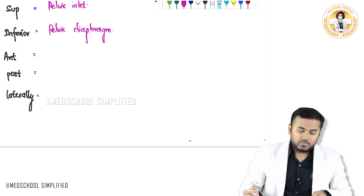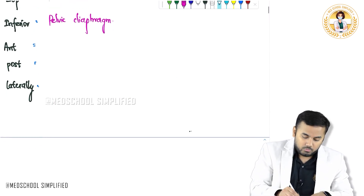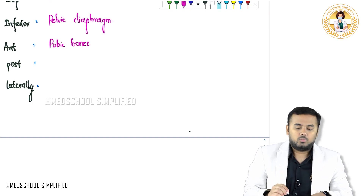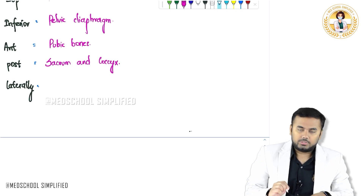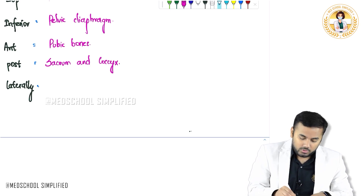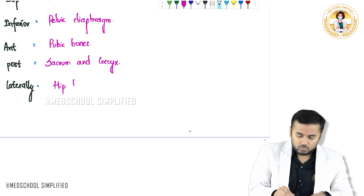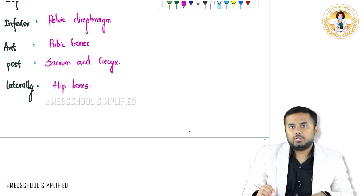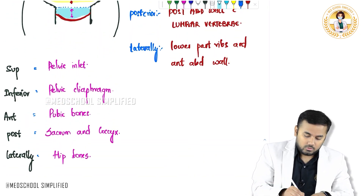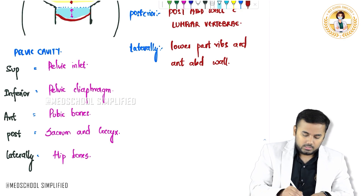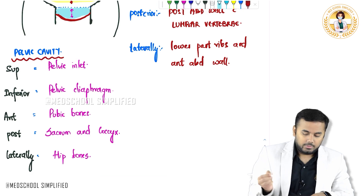So anteriorly you have got the pubic bones. Posteriorly you have got sacrum and coccyx. And laterally you have got your hip bones. These are the structures that are located in the pelvic cavity.